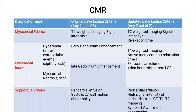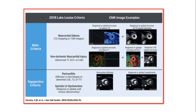Originally, there is the Lake Louise criteria — any two out of three from the criteria can diagnose myocarditis. In the updated features in 2018, any two out of two. In the updated 2018 criteria, detection by T2 mapping is more important than T2 imaging in decreasing noise and improving quantification of the amount of edema. Also, abnormal T1 quantification of extracellular volume by late gadolinium enhancement. Supporting features include the presence of pericarditis, pericardial effusion, or systolic regional wall dysfunction.